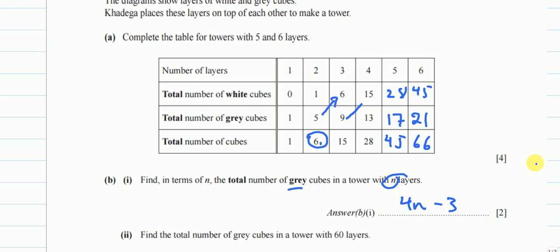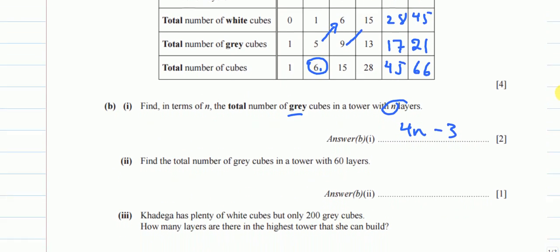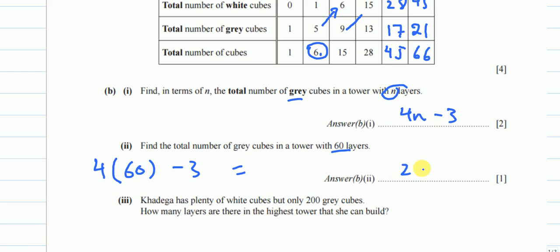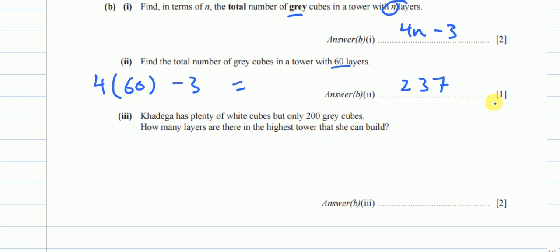For part B2, we find the total number of gray cubes in a tower with 60 layers. Substituting n = 60 into the formula: 4 × 60 − 3 = 240 − 3 = 237.